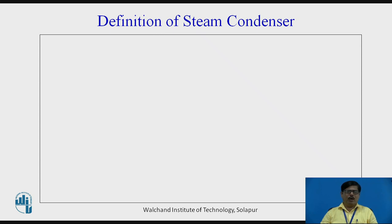In case of turbine or steam engine, if you want to let out the steam after expansion in the engine or turbine to the atmosphere, then we can expand the steam maximum up to atmospheric pressure theoretically, or practically speaking, the pressure of steam should be higher than atmospheric pressure so that it can come out. However, if you want to expand the steam below atmospheric pressure, then we need some closed vessel in which we can expand the steam below atmospheric pressure, that is vacuum pressure, which is called as the steam condenser.